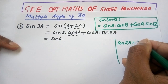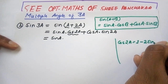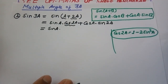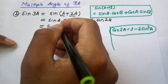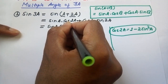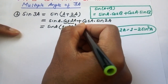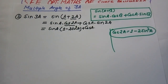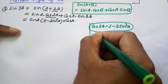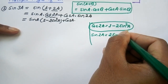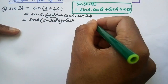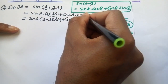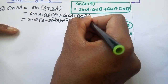Now, cos 2a equals 1 minus 2 sine square a. I'm substituting that inside the bracket: sine a into (1 minus 2 sine square a) plus cos a as it is. And for sine 2a, we use the formula: sine 2a equals 2 sine a dot cos a.